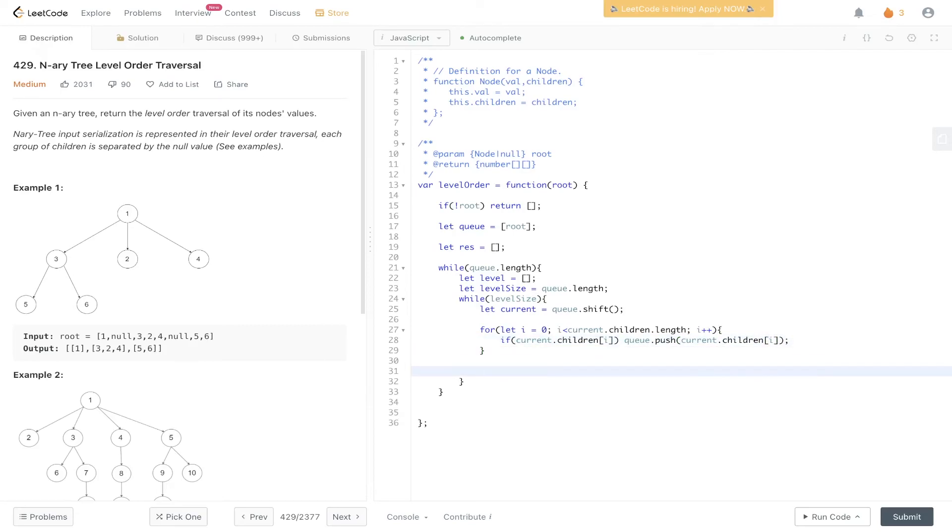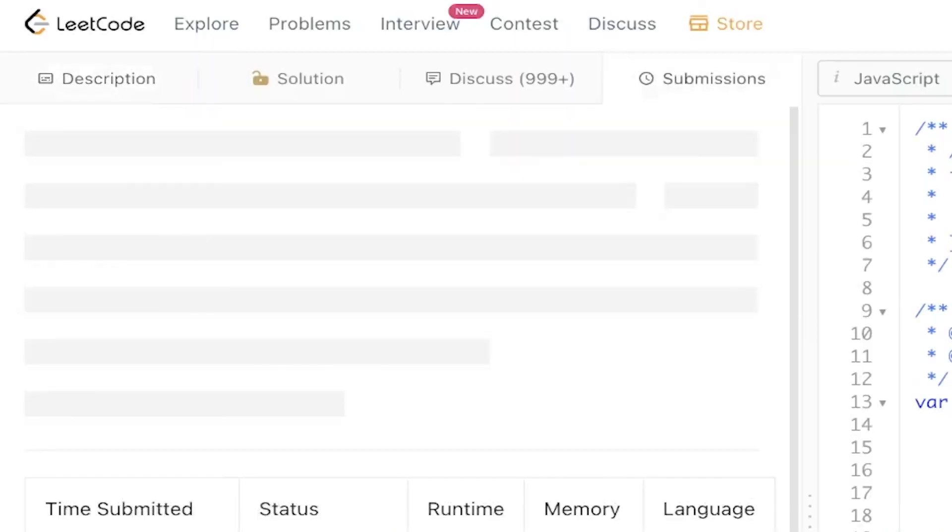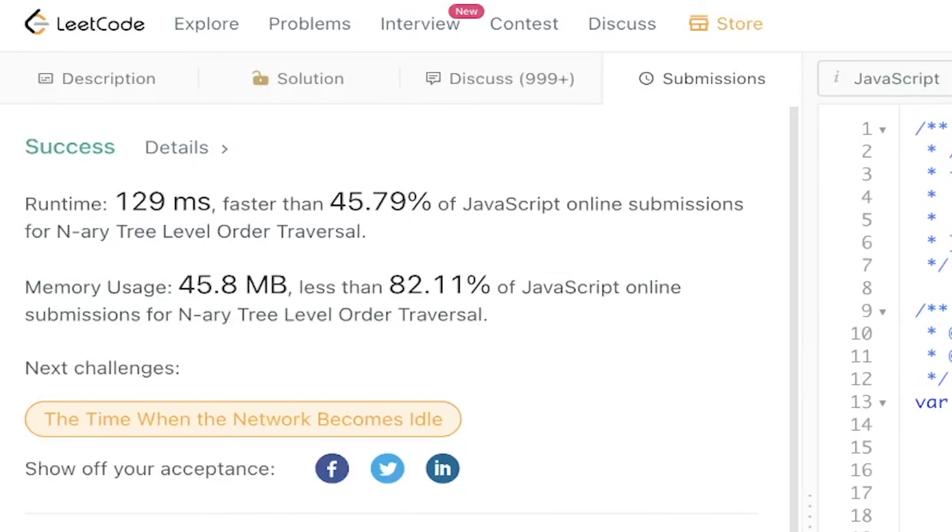Once we've done that and checked the current node, we can push the value of the current node into level. And then decrement level size. Once we finish each entire level, we need to push into results the level. And then we just return results. Submit it. And there you go.